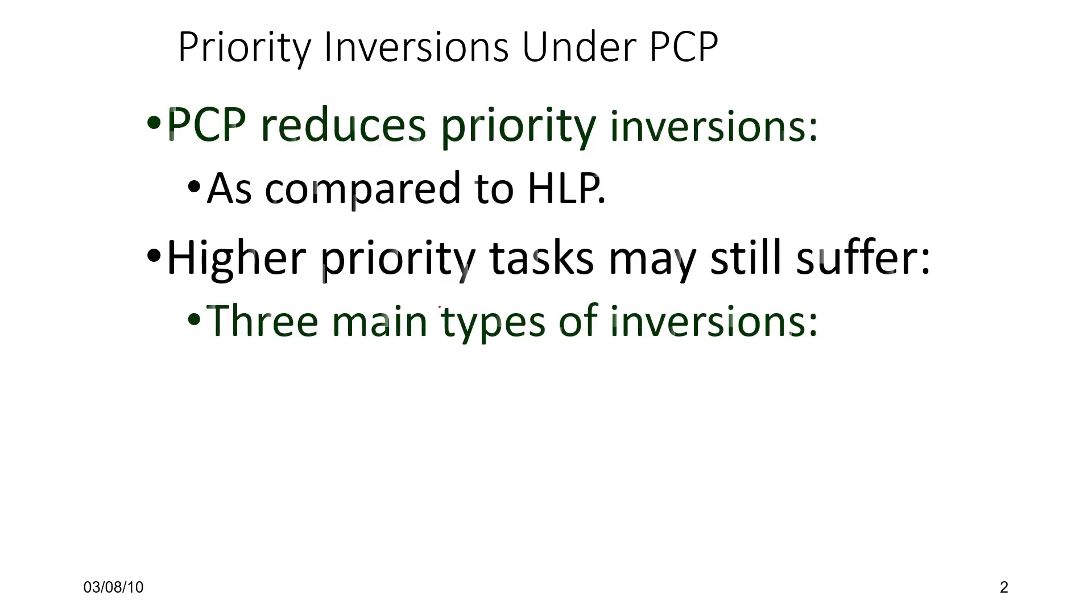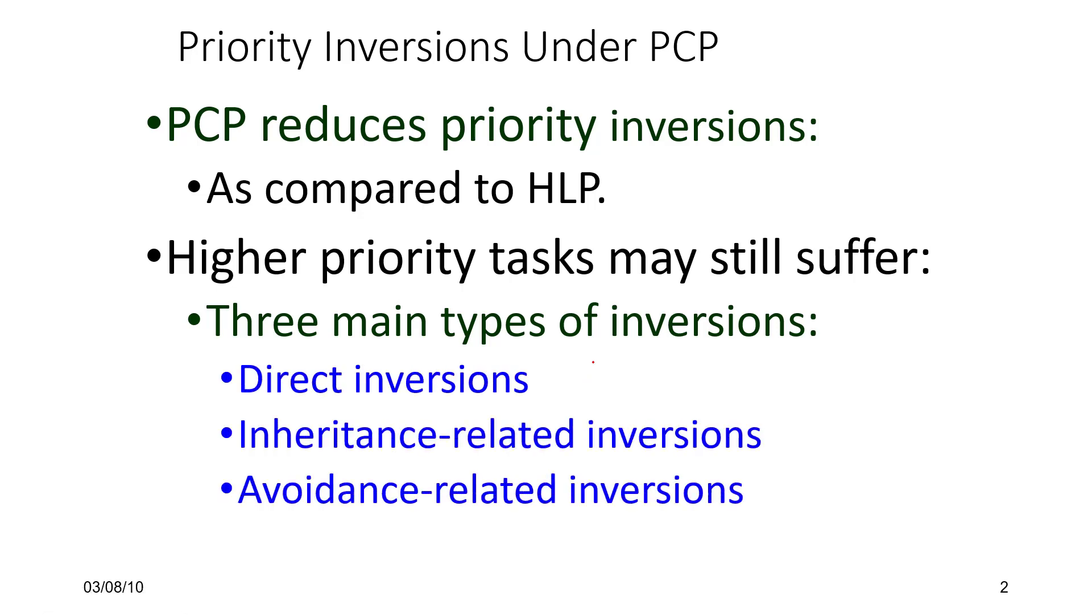If we look at priority inversions under PCP, they do reduce compared to HLP. The reason is that HLP jacks up the priority of a process that has acquired a resource to a very high value equal to the ceiling of the resource. But in PCP that doesn't happen, so high priority tasks may still suffer because of three kinds of inversions: direct inversions, inheritance related inversions, and avoidance related inversions, where this category is unique to PCP.